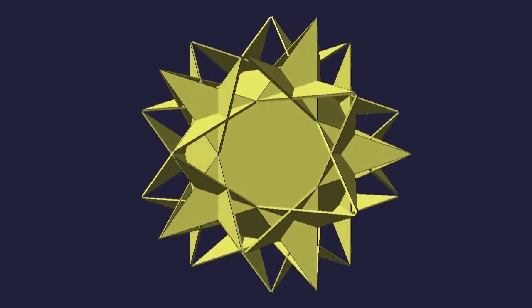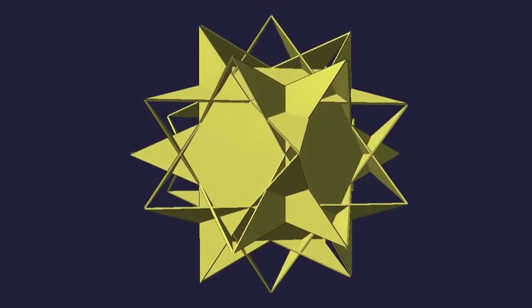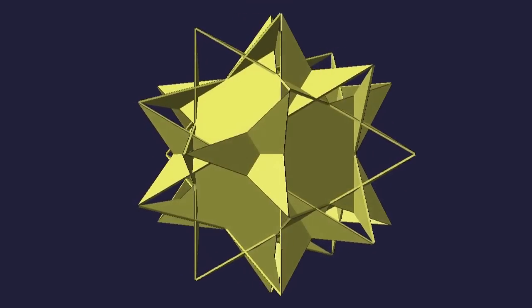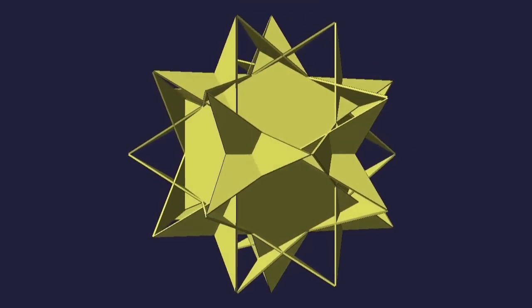It's a straightforward modification of the dodecahedron. Each pentagon is morphed into a star in a very natural manner. But the way they intersect requires a double slot along each line of intersection. And the long thin points are tricky to weave through each other and keep planar.